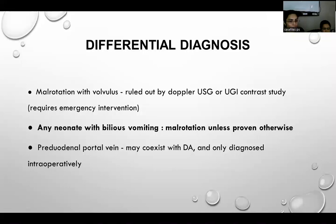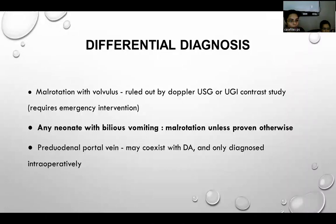Any infant with bilious vomiting is considered malrotation unless proven otherwise. Another cause of extrinsic obstruction — pre-duodenal portal vein — may coexist with duodenal atresia but is only diagnosed intraoperatively.